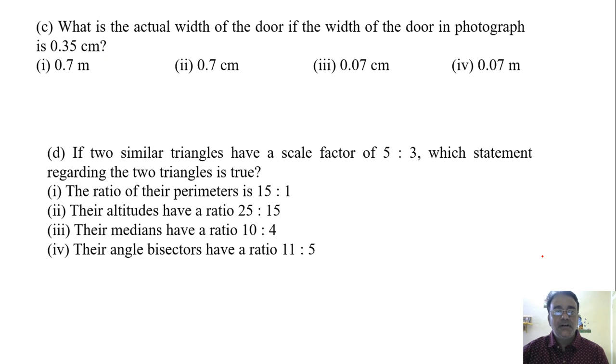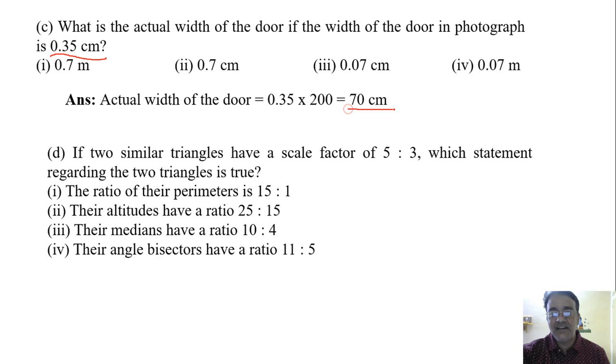So now the third question, what is the actual width of the door if the width of the door in the photograph is 0.35 centimeter? So again we will use the scale factor 1 is to 200, so we'll multiply with 200, 0.35, so 70 centimeter we are getting.